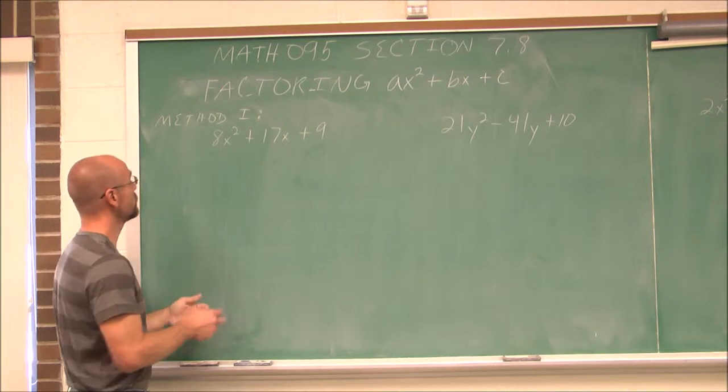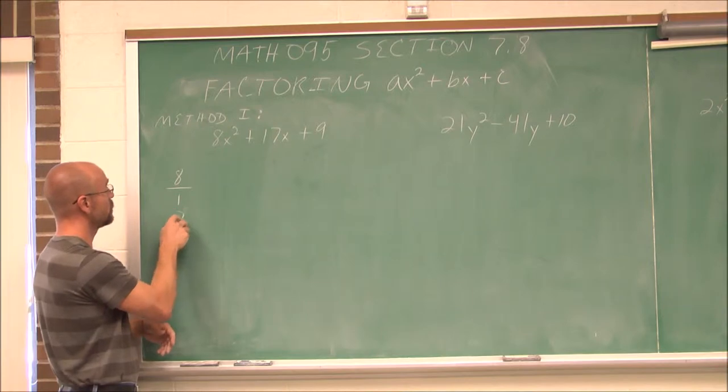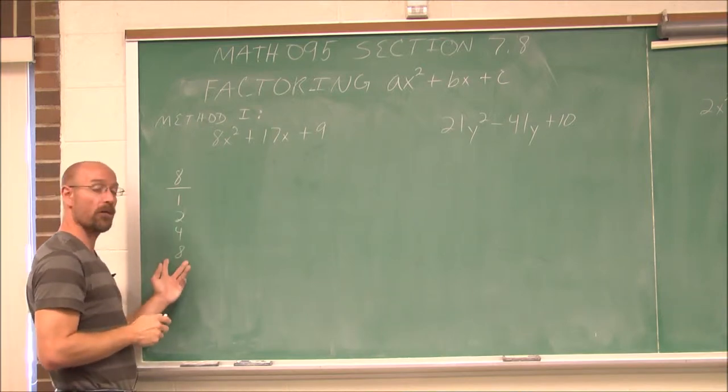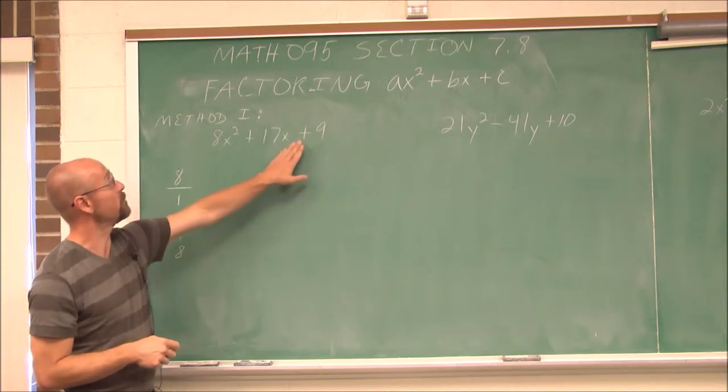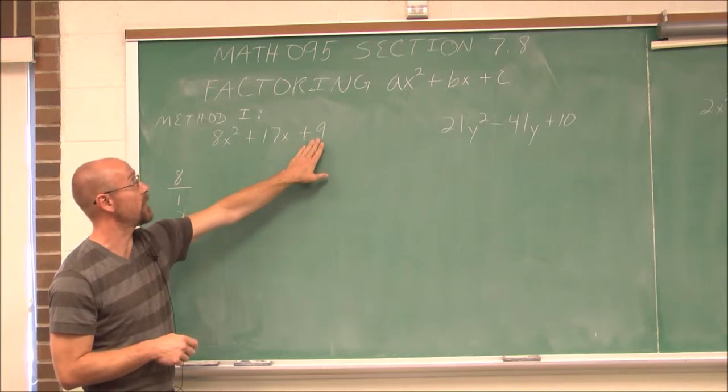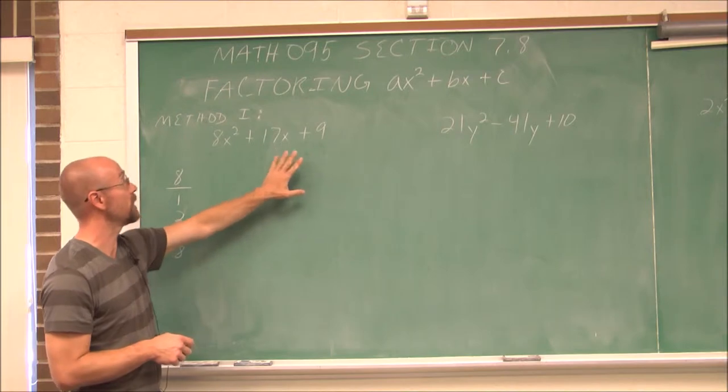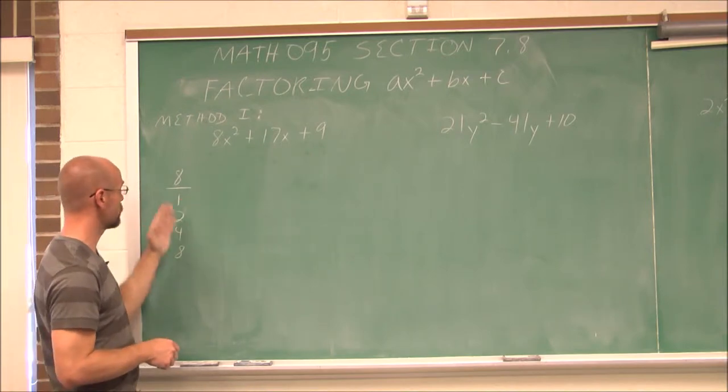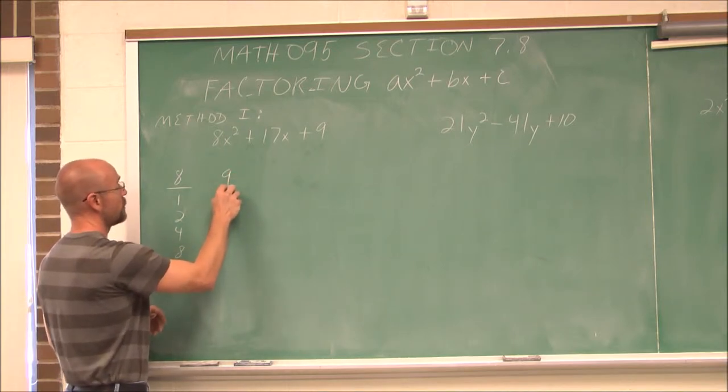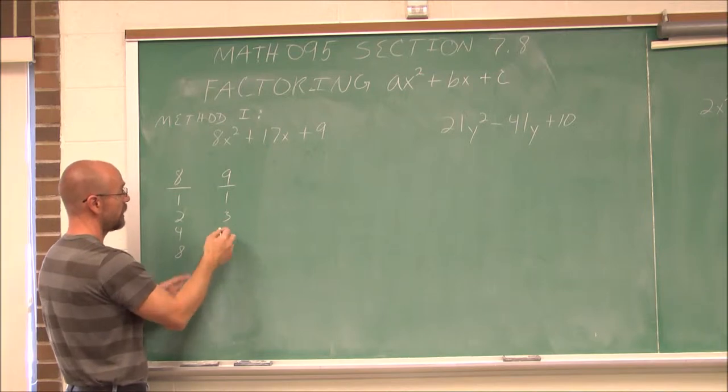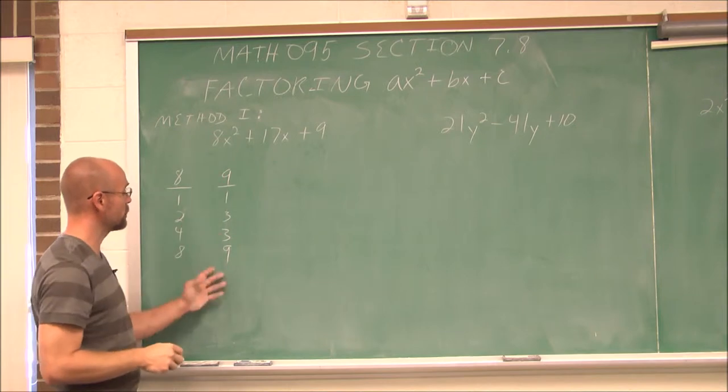If we recall in the previous section, 7.7, all we had to do was worry about the factors of c. But now we have this. So what I'm going to do is I'm going to list all the factors of 8, which would be 1, and 2, and 4, and 8. These are all the different factors. And we could consider the negatives as well, but because this is positive, that means these have the same sign.